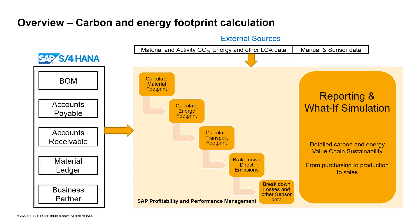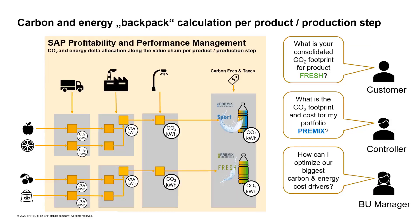The detailed results are then available for reporting and what-if simulation. Starting with the raw materials across all production steps, the delta additions to CO2 and energy are calculated and allocated until the consolidated result per product is finally determined. This gives customers a precise answer to the question: what is the consolidated carbon and energy footprint per product?